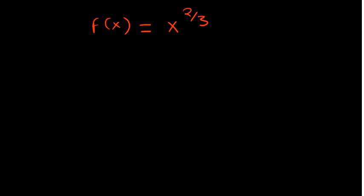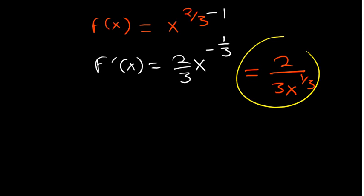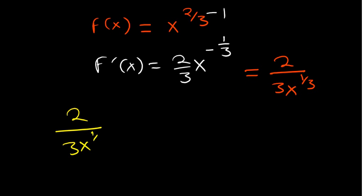The derivative becomes (2/3)x^(2/3 - 1) = (2/3)x^(-1/3). Taking the negative power to the denominator, this is 2 / (3x^(1/3)). Now, to find critical points where the derivative equals zero: this expression can never equal zero no matter what, meaning there are no stationary points.